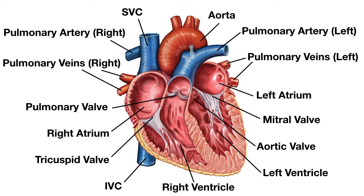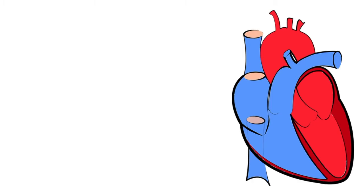In this video today we're going to go over the main anatomical structures of the heart, and by the end of this video you're going to be able to easily label a diagram. We've got some simple tricks that will help you remember all the different structures. We're first going to use a cartoon diagram of the heart to walk through all the main anatomical structures, then go back to the first diagram and label the entire thing without difficulty.